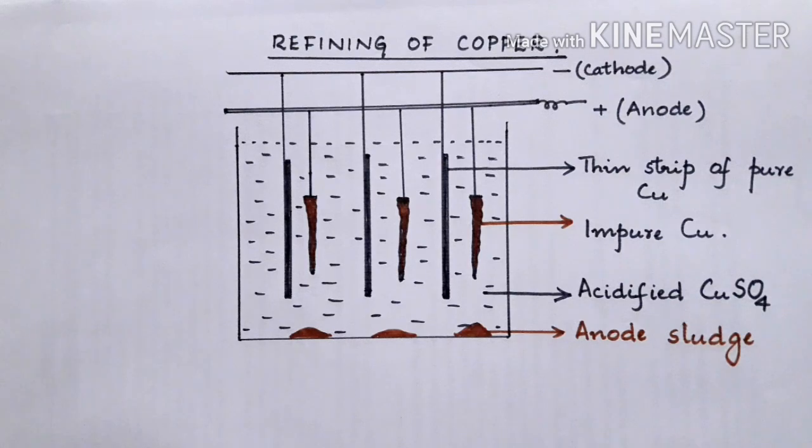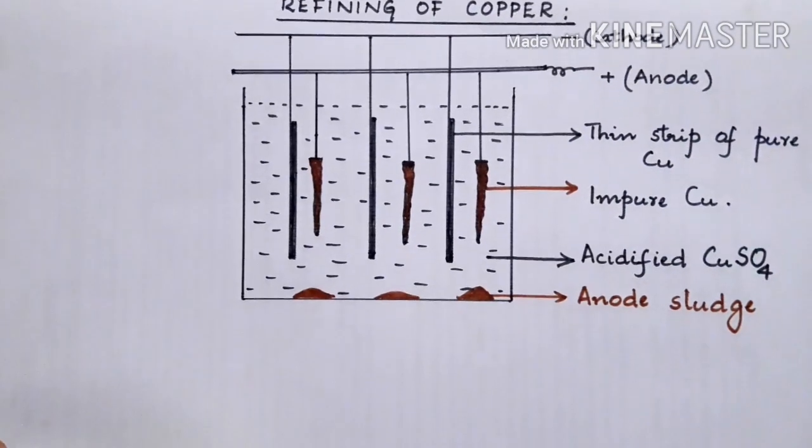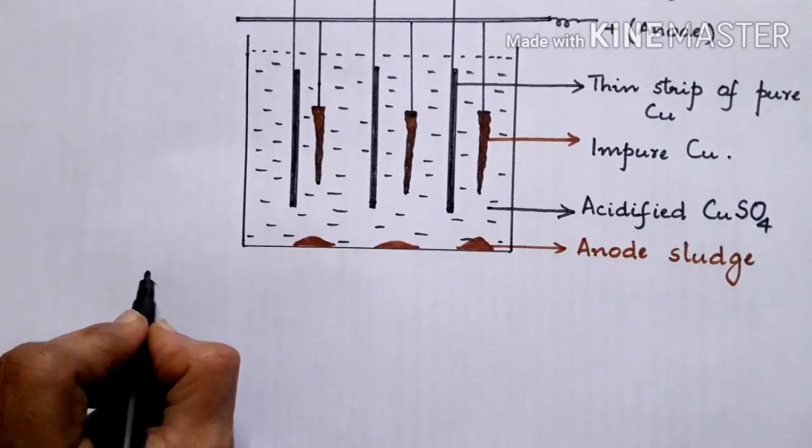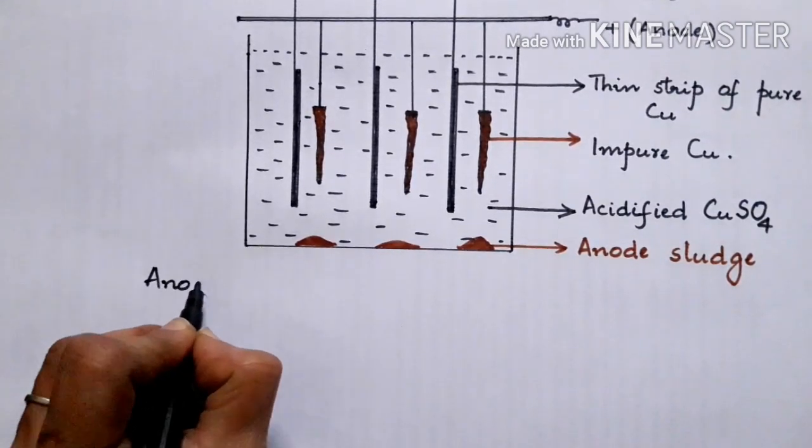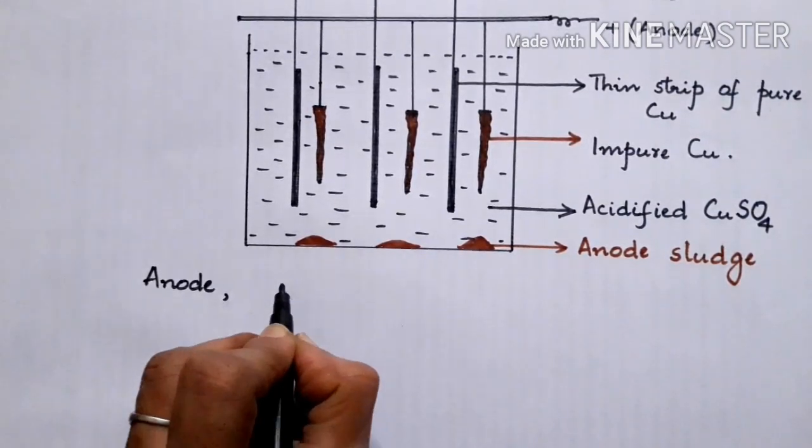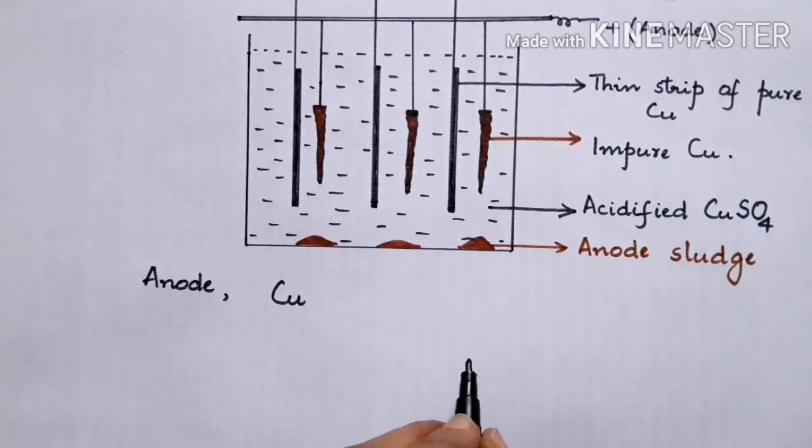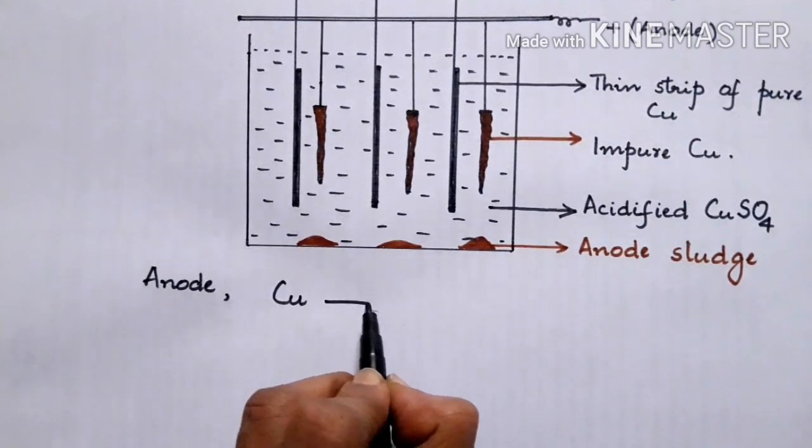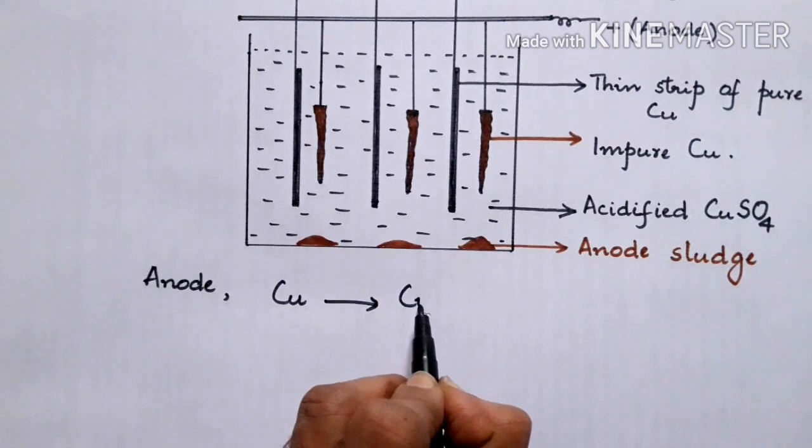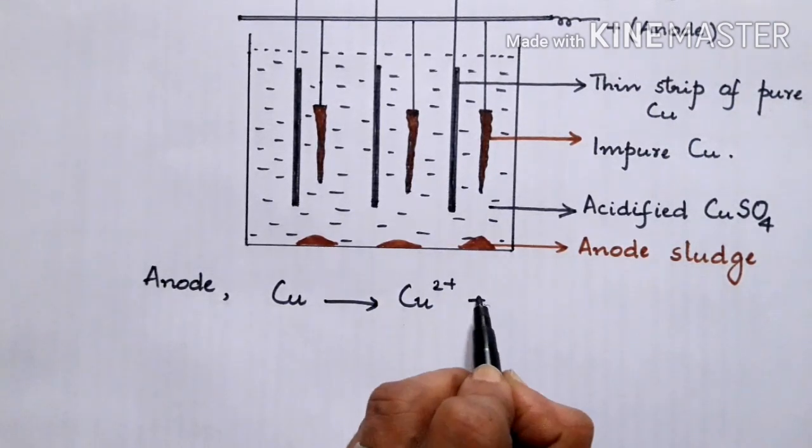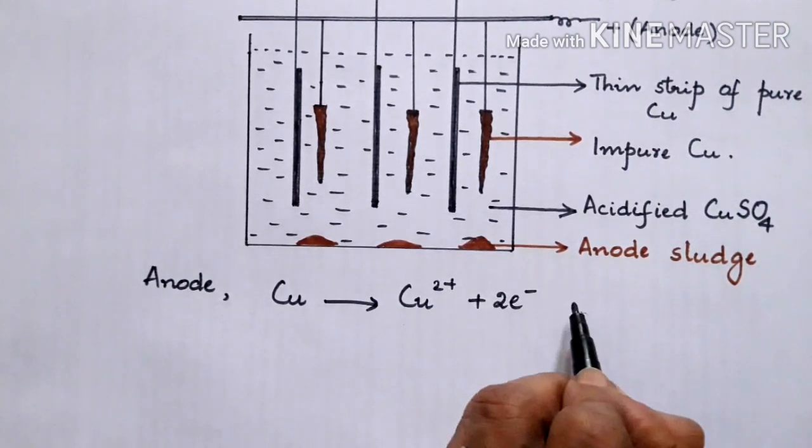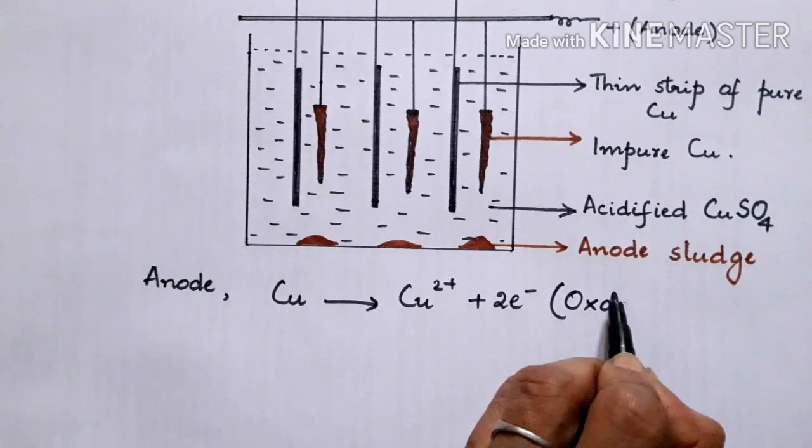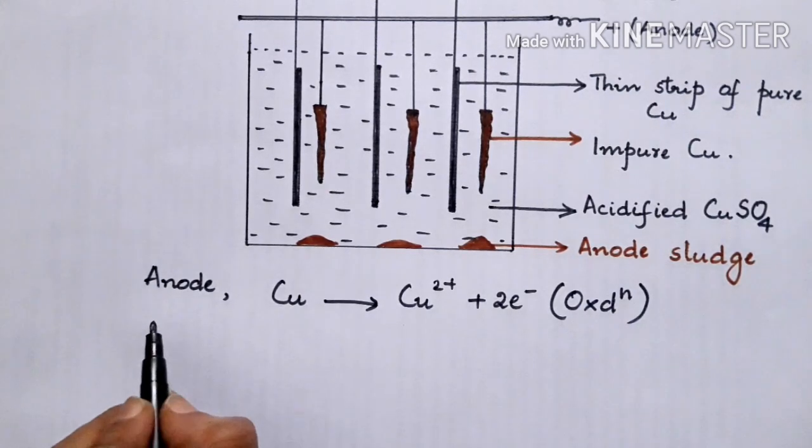When the connections are made, you find that reactions occur. So at the anode, we find that the copper from the impure copper slowly converts into Cu2+ releasing two electrons. So this is an oxidation reaction that is occurring at the anode.